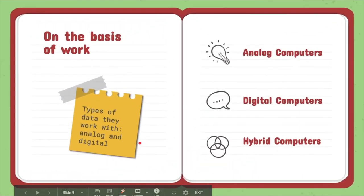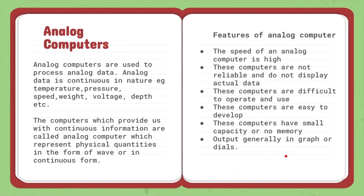On the basis of work, computers are classified into three different types: analog computers, digital computers, and hybrid computers. Analog computers are used to process analog data. Analog data is continuous in nature. Examples include temperature, pressure, speed, weight, voltage, and depth. Computers that provide continuous information are called analog computers, which represent physical quantities in wave or continuous form.